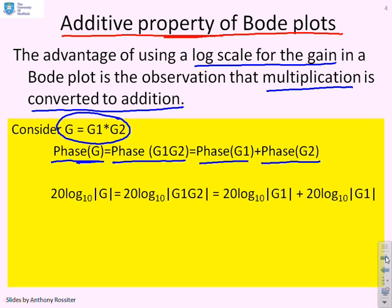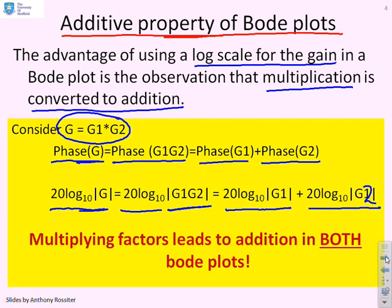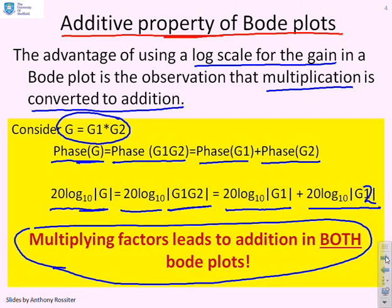What about gains? Well, we're taking logs of the gain. We're doing 20 log to the base 10 of modulus of G, which is 20 log to the base 10 of G1 times G2. And using rules of logs, that's 20 log to the base 10 of modulus G1 plus 20 log to the base 10 modulus G2. And so what do we get? Multiplying factors leads to addition in both Bode plots. So we can change multiplication to addition, and addition is a lot easier to see. And so we're going to show you now how we can use that to do rapid sketching.